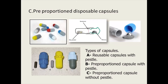Pre-proportioned disposable capsules are also available. This is a cross-section of the capsule where two compartments are separated by a membrane — one contains powder and one contains mercury. When put into the amalgamator and vibrated, the inner membrane ruptures and both alloy and mercury get triturated. There are different types: reusable capsule with a vessel, pre-proportioned capsule with a vessel, and a capsule without a vessel.